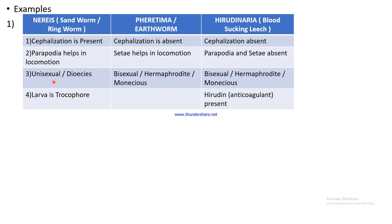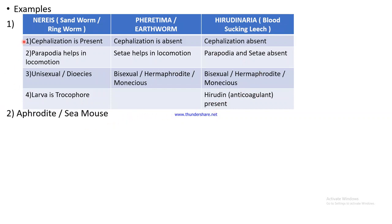Nereis is unisexual or dioecious — male and female are separate. Pheretima is bisexual, hermaphrodite, or monoecious. Hirudinaria is also bisexual, hermaphrodite, or monoecious. In Nereis the larva is a trochophore, and in Hirudinaria there is a special substance called hirudin, which is an anti-coagulant.